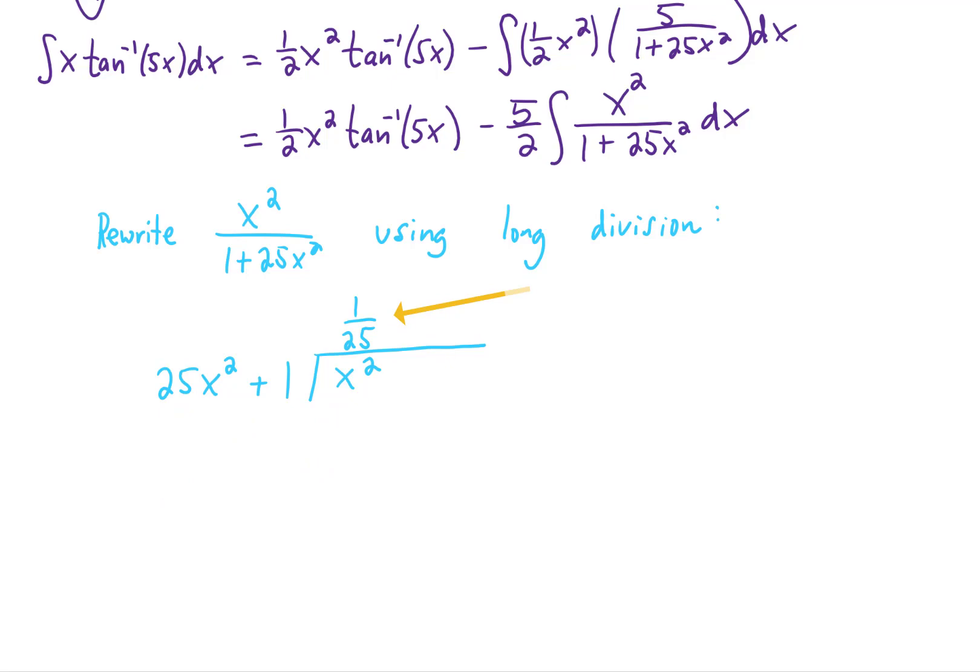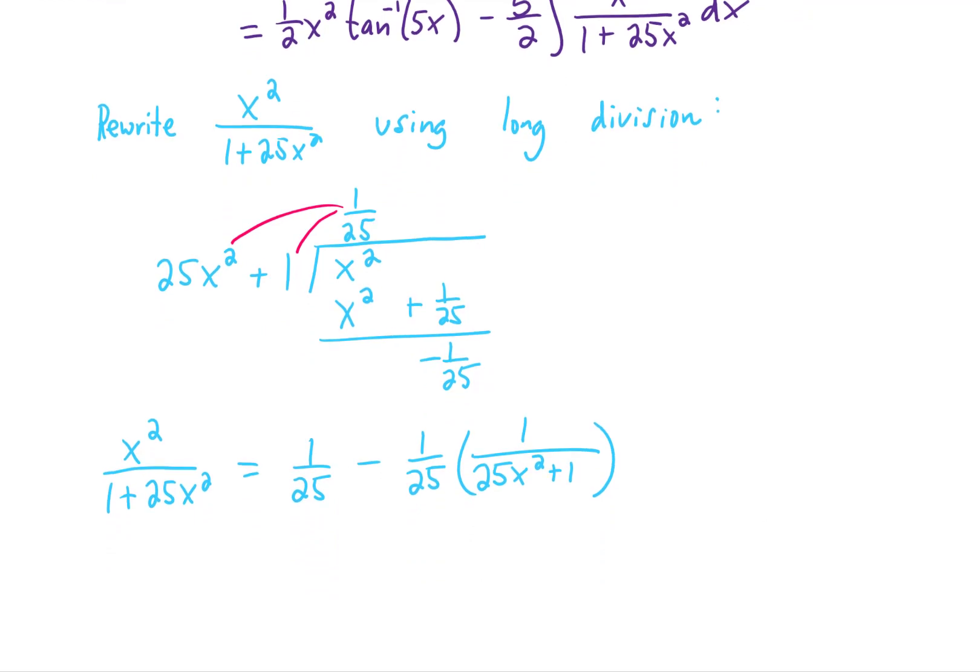If we then multiply that 1/25th through, we get x squared plus 1/25th. And if we subtract, we get negative 1/25th as our remainder. That tells us that we can rewrite the original integrand as the quotient plus the remainder divided by the original denominator. Perhaps this would look just a little bit better if we pulled the 1/25th out of the entire thing. And there we go.